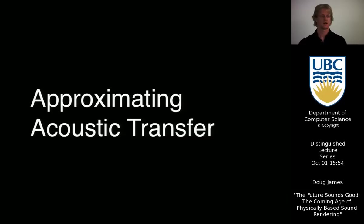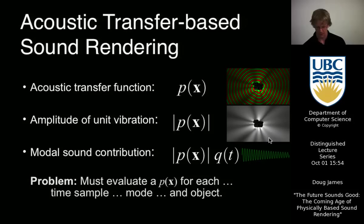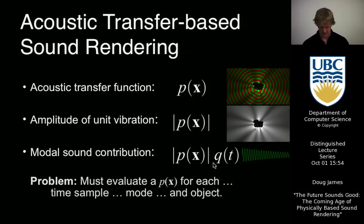If we tap some object that has some vibrations, how can we figure out what the sound is going to be like at some point in space? We can model acoustic transfer for these vibrations. There's some pressure field — a complex-valued field — that describes the harmonic waves around the object. The amplitude of that function tells you where it's loud for a particular vibration mode. We can compute these transfer functions for every vibration mode of a rigid object, and that'll tell us where each mode is loud. Multiplying by a modal amplitude vibration function gives us a model of the amplitude of the sound at any point in space.